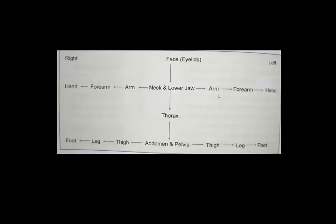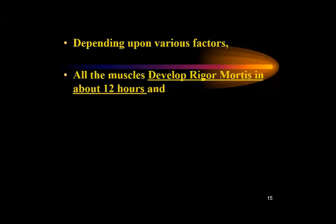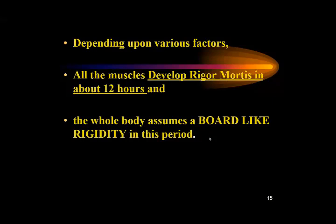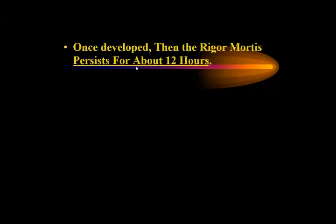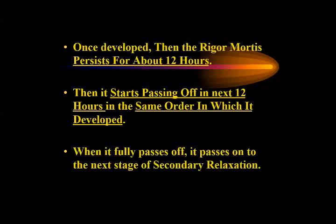It goes into the arm, then forearm and hand. For the thorax and pelvis, it starts from the abdomen and pelvis, then thigh, leg, and foot. All the muscles develop rigor mortis in about 12 hours, and the whole body assumes a board-like rigidity in this period. Once developed, rigor mortis persists for about 12 hours, then starts passing off in the next 12 hours in the same order in which it developed, passing on to secondary relaxation.